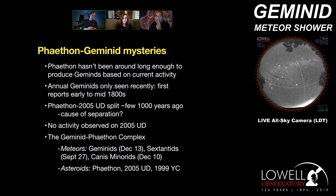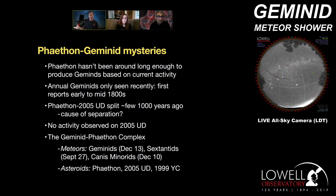Phaethon and the Geminids are just two parts of something referred to in the literature as the Geminid-Phaethon complex — a complex of not just meteor showers but asteroids as well. We have three showers that may all be linked to Phaethon or to 2005 UD. The asteroids Phaethon, 2005 UD, and 1999 YC all seem to be on the same orbits. Understanding the picture that generates all of this interesting observable phenomenon is very much an active area of research.